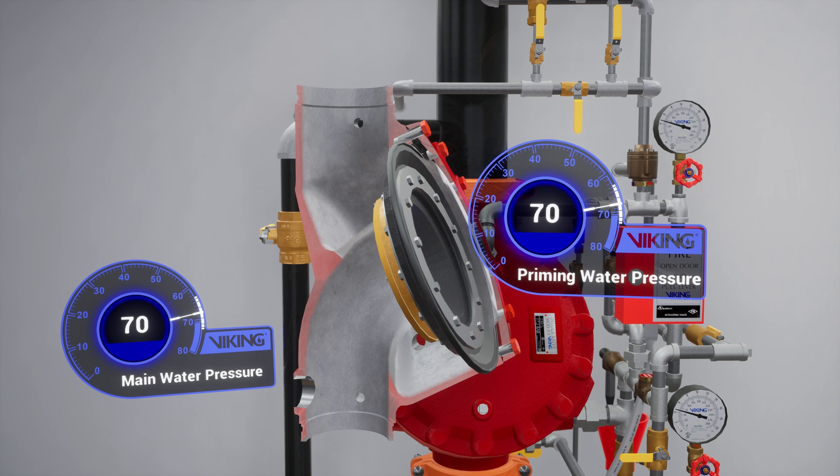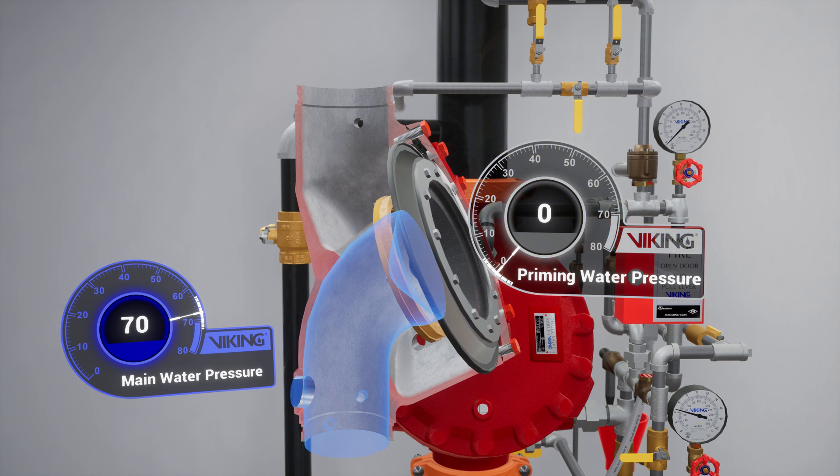During a fire when the releasing system operates, pressure is released from the priming chamber. The deluge valve clapper opens to allow water to flow into the system piping.